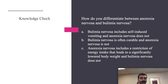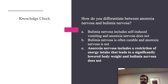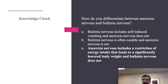Knowledge check: How do you differentiate between anorexia nervosa and bulimia nervosa? Option A: bulimia includes self-induced vomiting and anorexia does not. Option B: bulimia is often curable and anorexia is not. Option C: anorexia includes restriction of energy intake leading to a significantly lowered body weight and bulimia does not. The answer is C. The main differentiating factor is body weight. Someone with anorexia has a low BMI — they restrict to the point of significantly low weight. Someone with anorexia can still binge and purge, but their BMI remains low. With bulimia, there is binging and purging without that loss of weight.